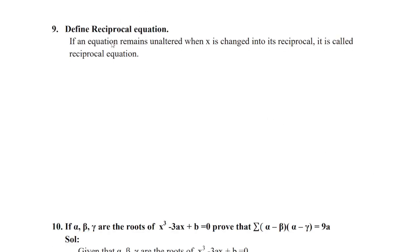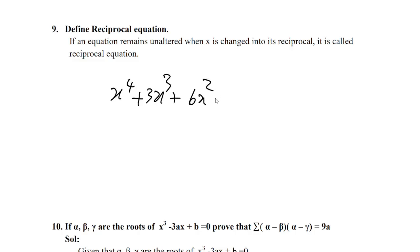Definition: What is a reciprocal equation? If an equation remains unaltered when x is changed into 1/x, that is called a reciprocal equation. Example: x⁴ + 3x³ + 6x² + 3x + 1 = 0. The first and last coefficients are both 1, and 3 and 3 are symmetric — this is one example of a reciprocal equation.